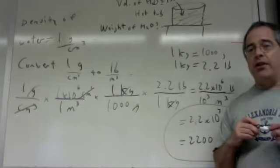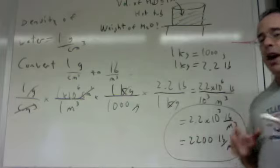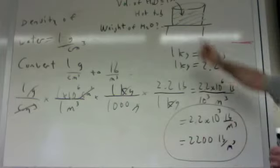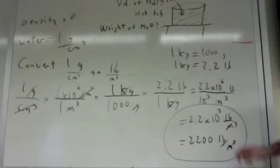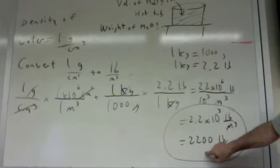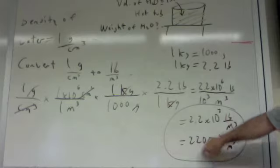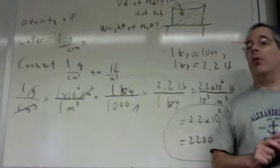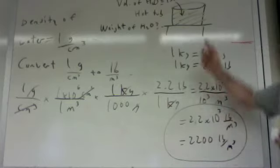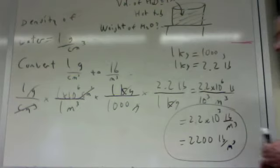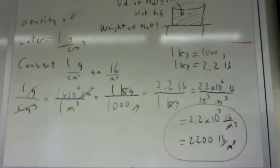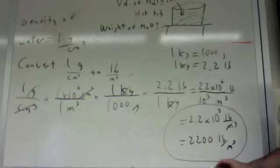That is 2,200 pounds per cubic meter. When my friend did the calculation, she was surprised to learn that a cubic meter of water — which really isn't that much — weighs 2,200 pounds. That's like putting a light car on her deck, and she had to get it slightly reinforced. Factor labeling saved her from a broken deck. Thanks for watching.